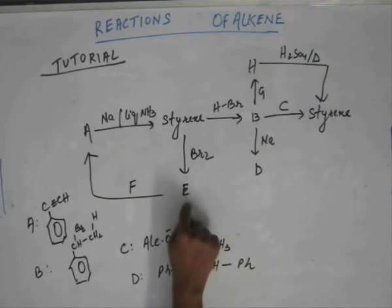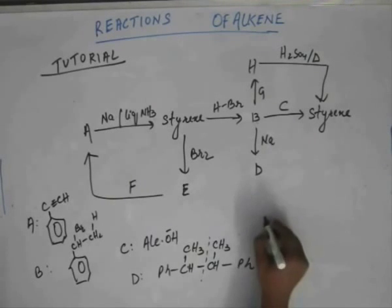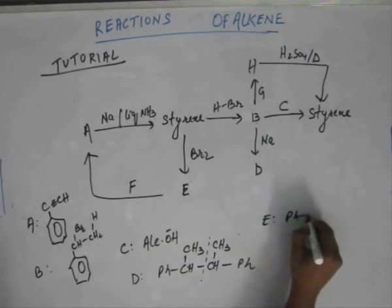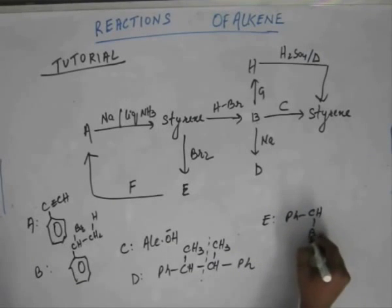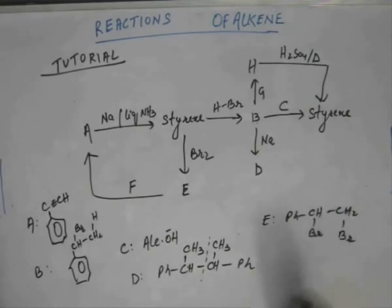If you have to find E, the reaction from styrene to E, we have just studied addition of Br2. There will be a vicinal dibromide. So E is a vicinal dibromide. Simple, easy.